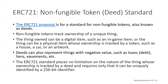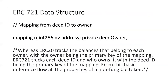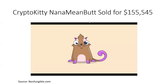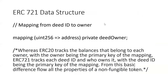You can review the details of the standard on GitHub. Let's look at the primary difference between ERC-20 and ERC-721 in the data structure. Here's a recent example: CryptoKitty NanaMe Butt is a collectible digital artwork of a cat that sold for over $150,000. The big difference between ERC-721 and ERC-20 is the mapping that is used.